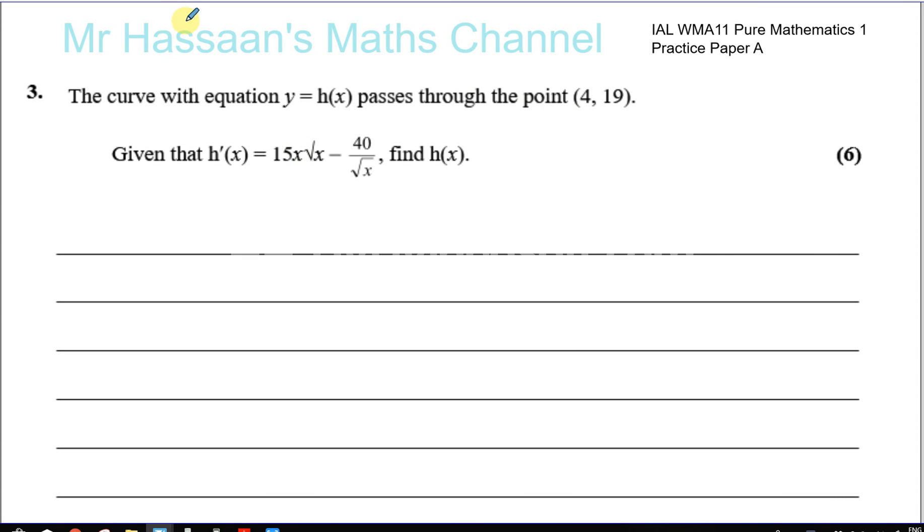Okay, so here we have question number three from practice paper A for the new P1 syllabus. We're told that the curve with equation y equals h(x) passes through the point (4, 19).